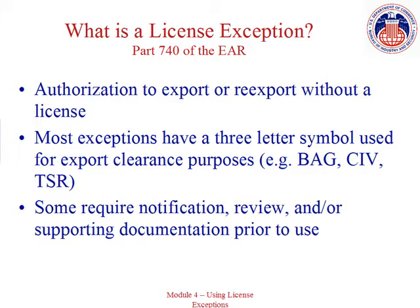The terms and conditions for each particular license exception are described in Part 740 of the Export Administration Regulations. Some license exceptions may include notification, review, or reporting requirements. However, there is generally no need to apply for permission to use a license exception.